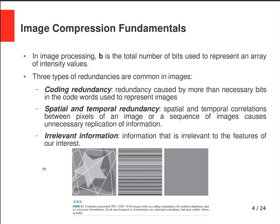Spatial and temporal redundancy is caused by correlations between pixels of an image or a sequence of images, causing unnecessary replication of information. For example, in a video where most objects in the scene are fixed and not moving, you only need one copy of those static objects — that is an example of temporal redundancy, and exploiting it can reduce the amount of redundant data.